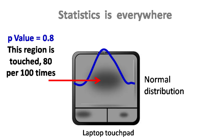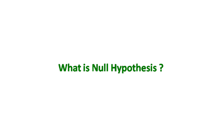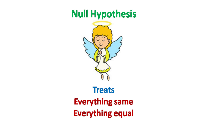The statistical definition of p-value is that p-value is the probability value for the null hypothesis to be true. To understand p-value, we should first try to understand the null hypothesis. The null hypothesis is the hypothesis which treats everything the same, everything equal.